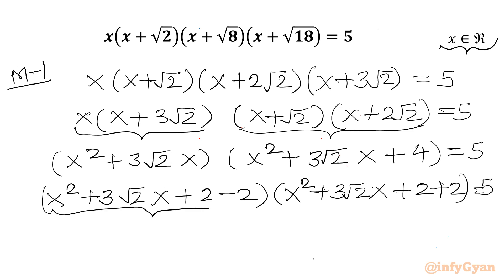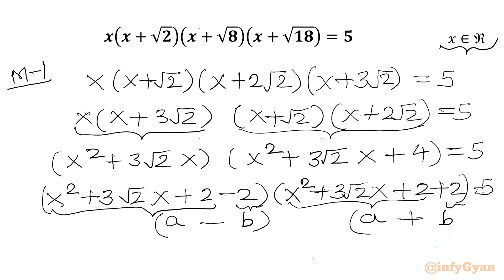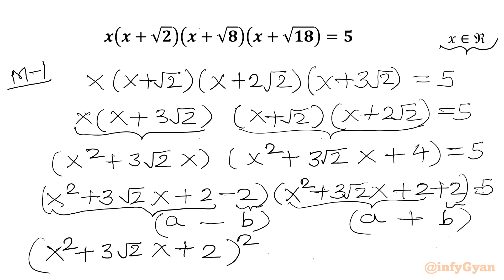Now if I consider (x² plus 3√2·x plus 2) as a, and 2 as b, then the first bracket is (a minus b) and the second bracket is (a plus b). So I apply the difference of squares identity: (a minus b)(a plus b) equals a² minus b². So I write (x² plus 3√2·x plus 2)² minus 2² equal to 5.